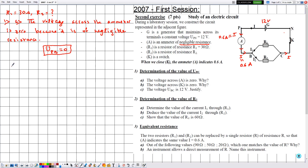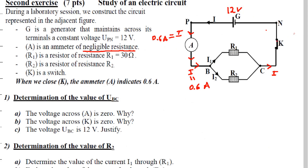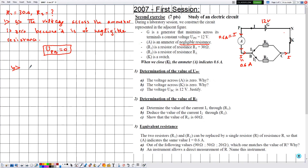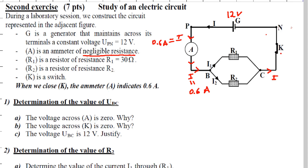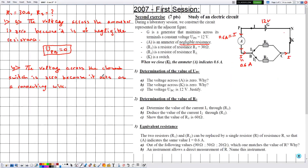In part b, the voltage across K is zero, knowing that K is a closed switch. A closed switch acts as a connecting wire, so the voltage across the closed switch is zero. The name of that voltage is UCN, so UCN equals zero.